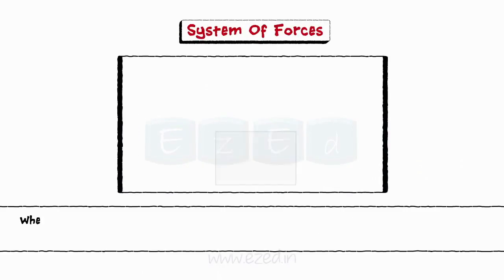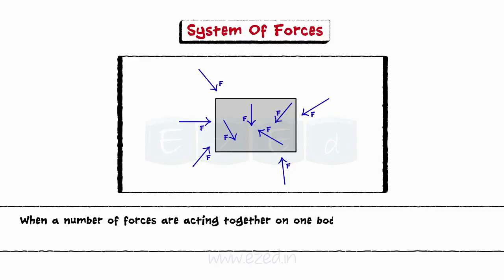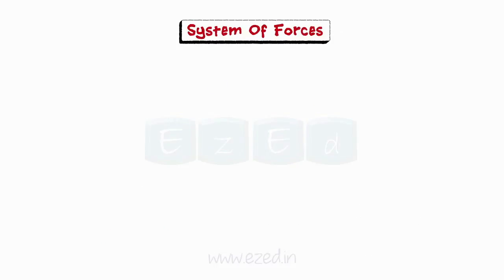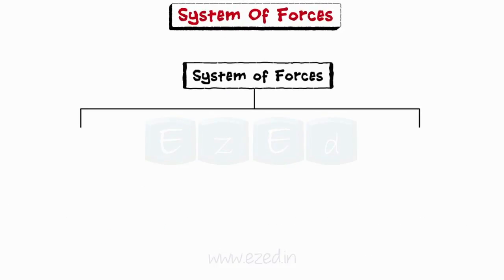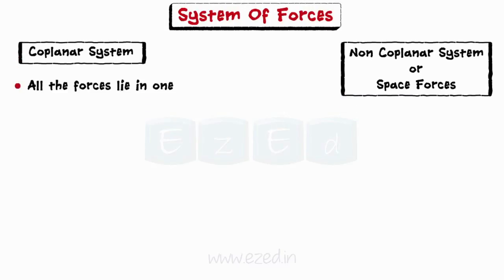Now let's learn about system of forces. When a number of forces are acting together on one body, such an arrangement is said to be a system of forces. The two main types are coplanar and non-coplanar force systems. When all the forces lie in one plane, such an arrangement is called a coplanar force system.